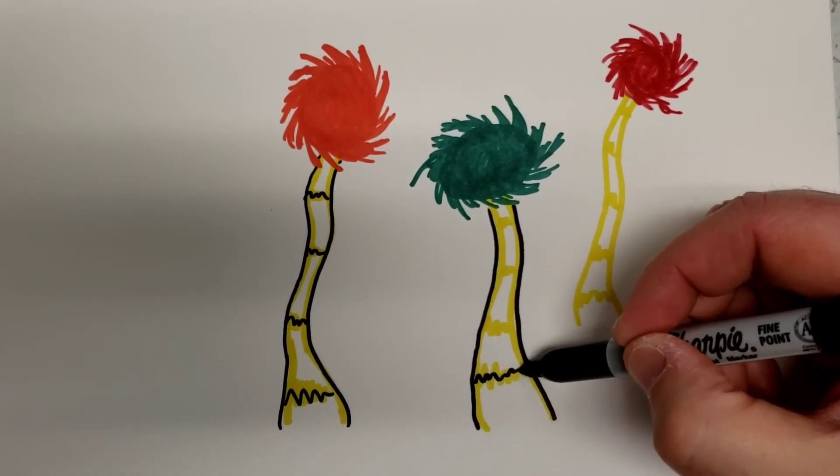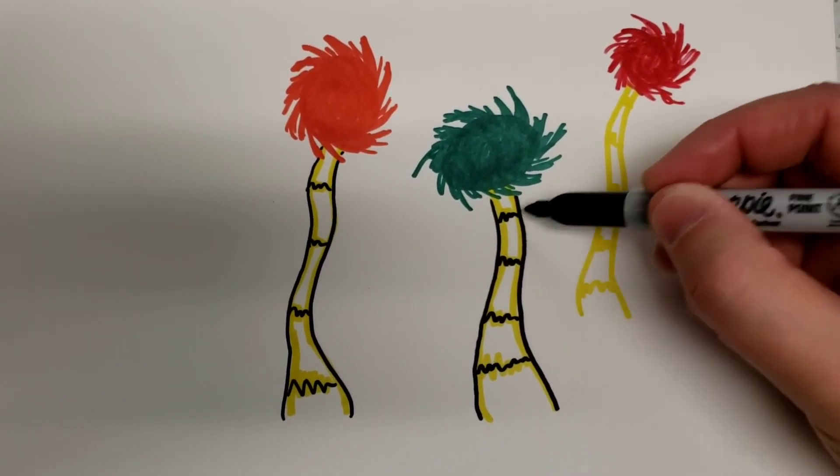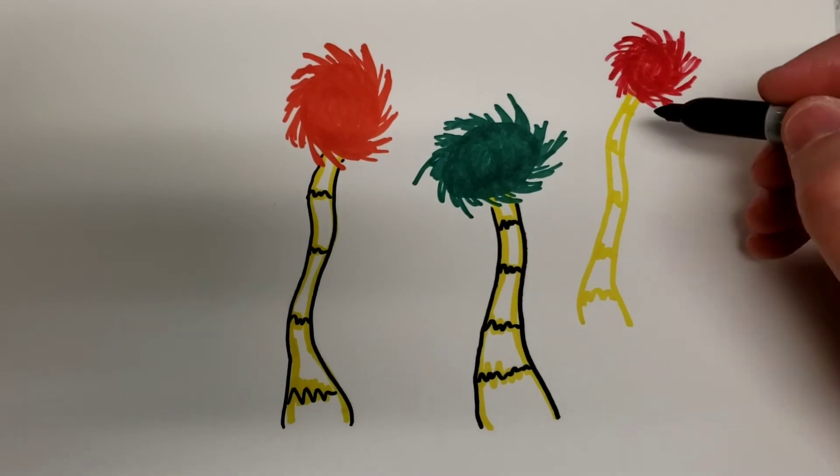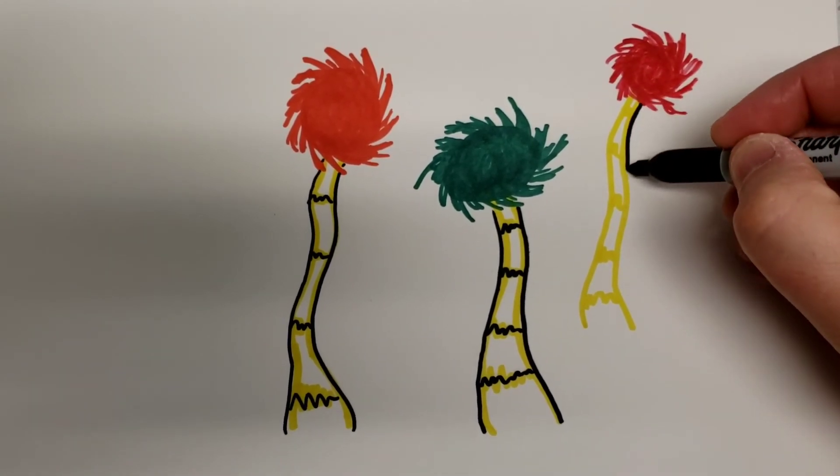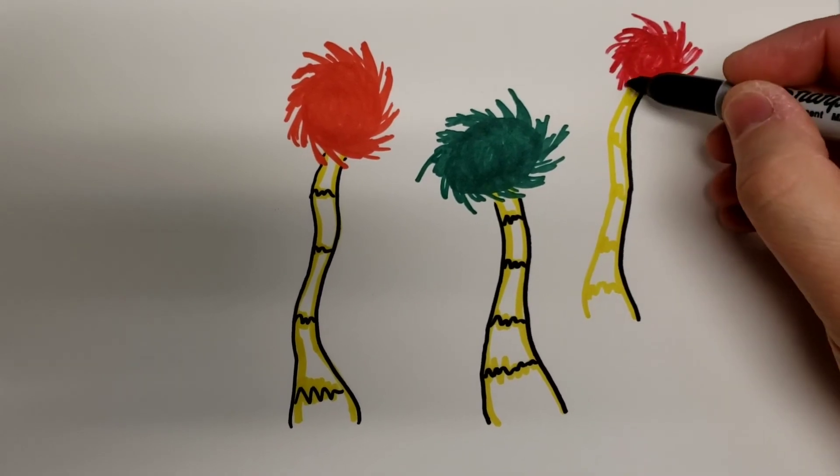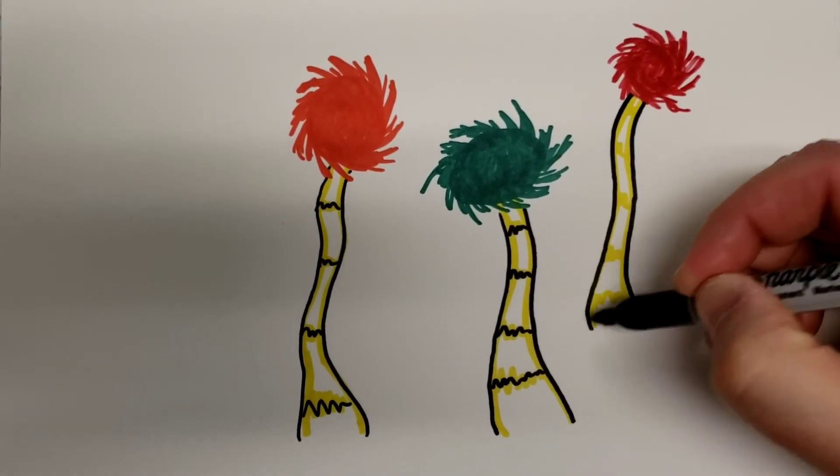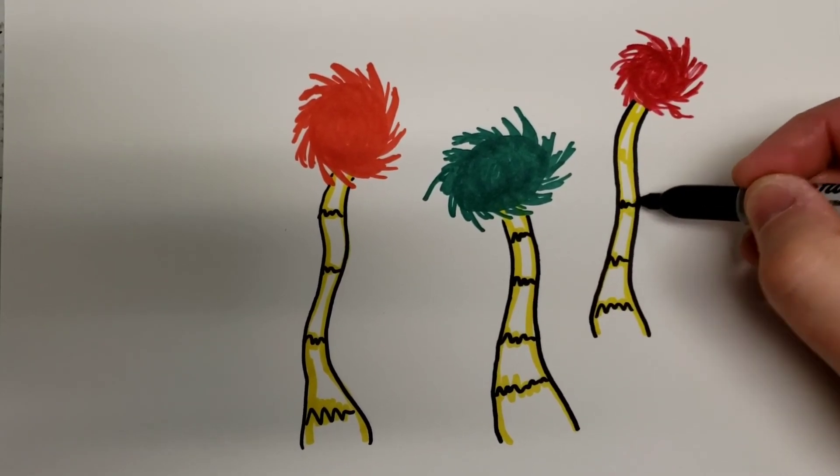And then where you do the yellow squiggles, put some black squiggles. It just adds a little bit more, like I said, boldness to it. It makes your artwork stick out just a little bit better. You don't have to do this, this is just something that you can add to sort of enhance your work.